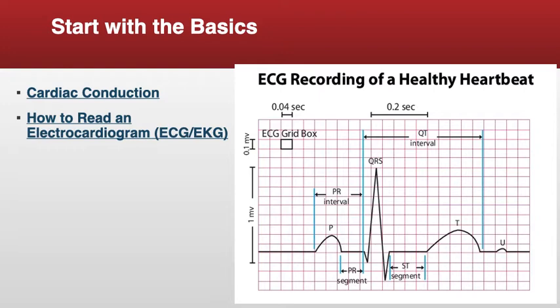When it comes to interpreting an EKG, we need to start with the very basics — we have to know the components of an EKG reading. The diagram on the right is a diagram of a normal healthy heartbeat. The components we need to get familiar with are P wave, P to R interval, QRS, ST, and T segment.